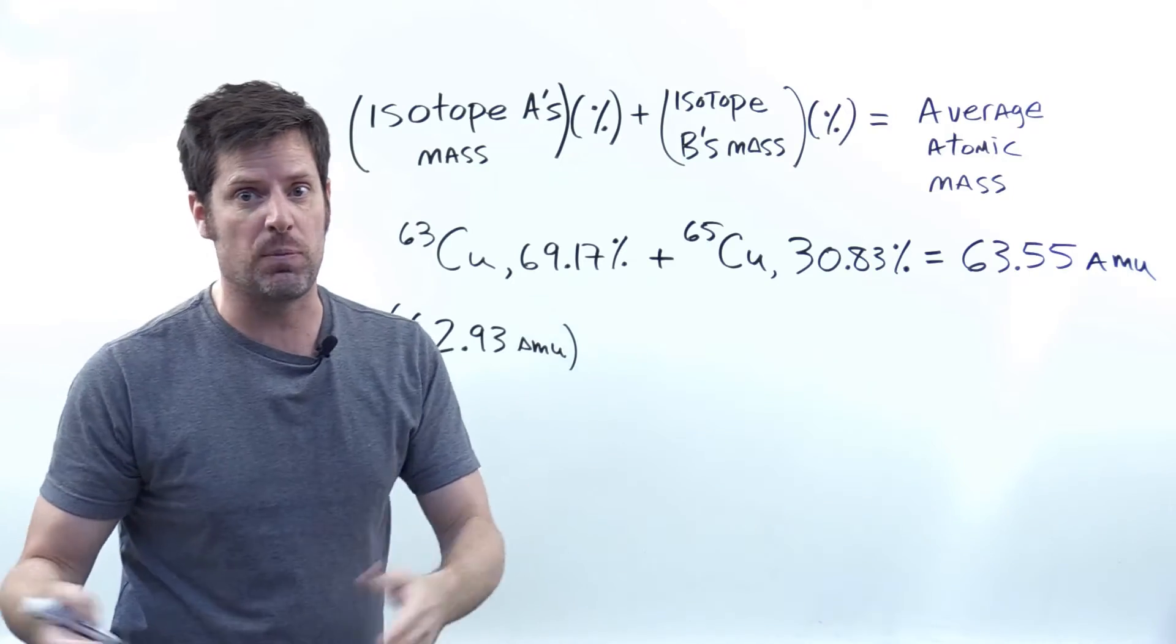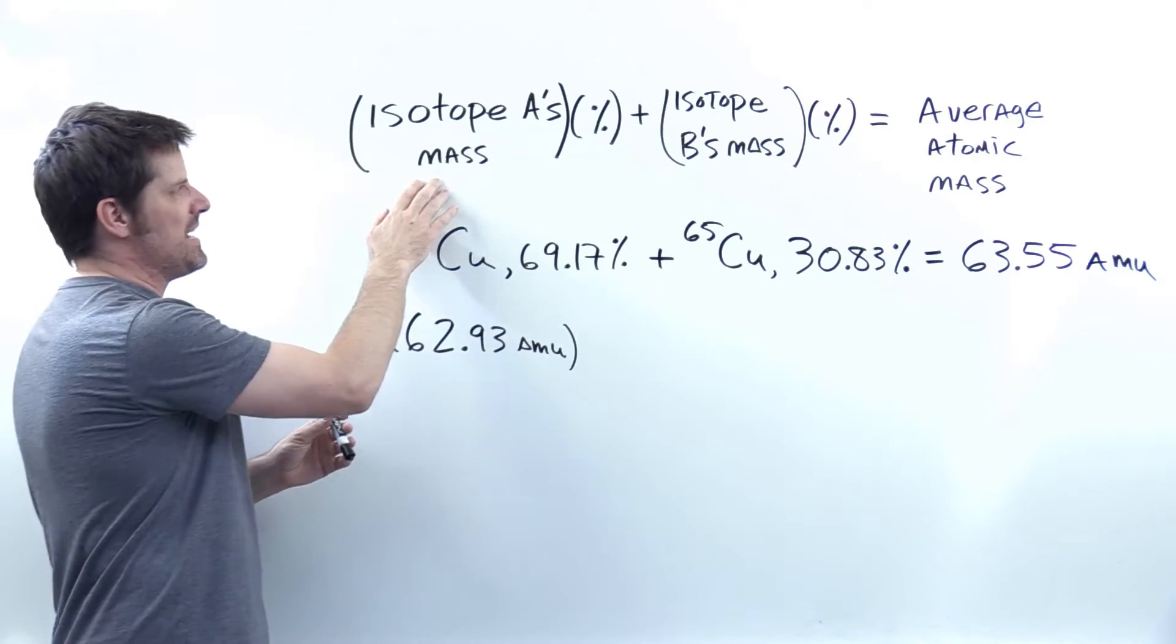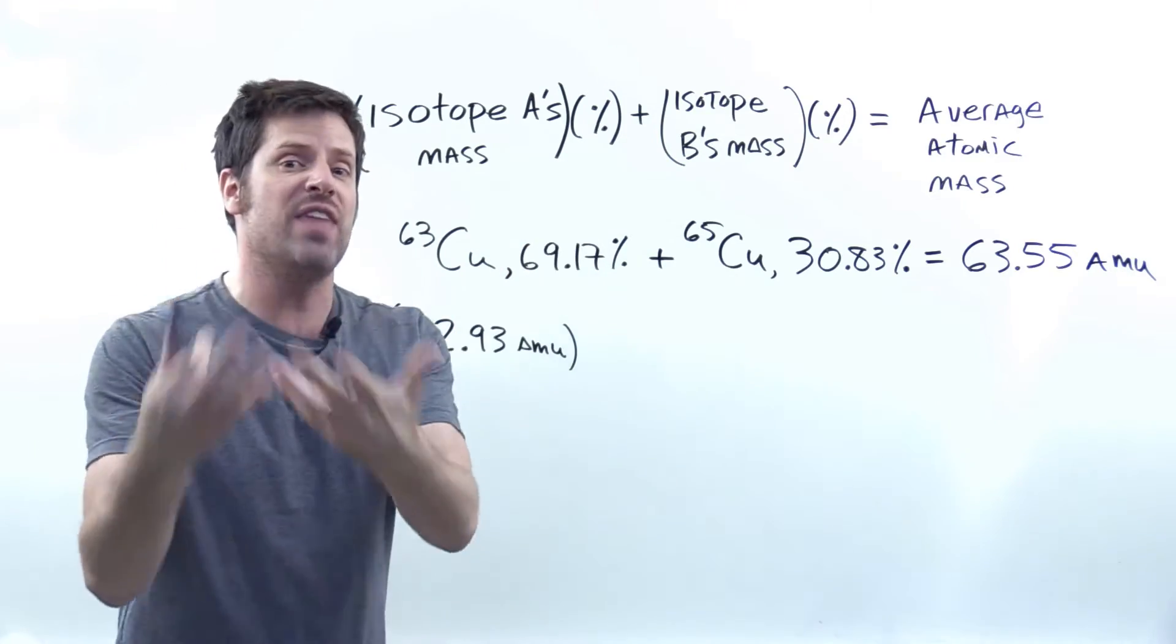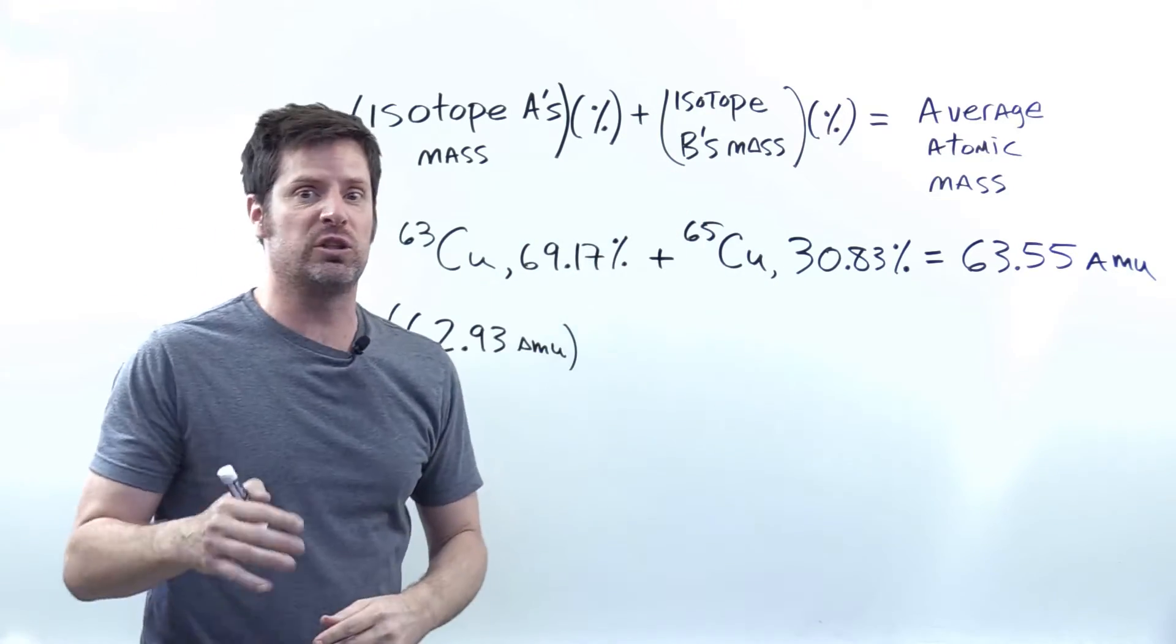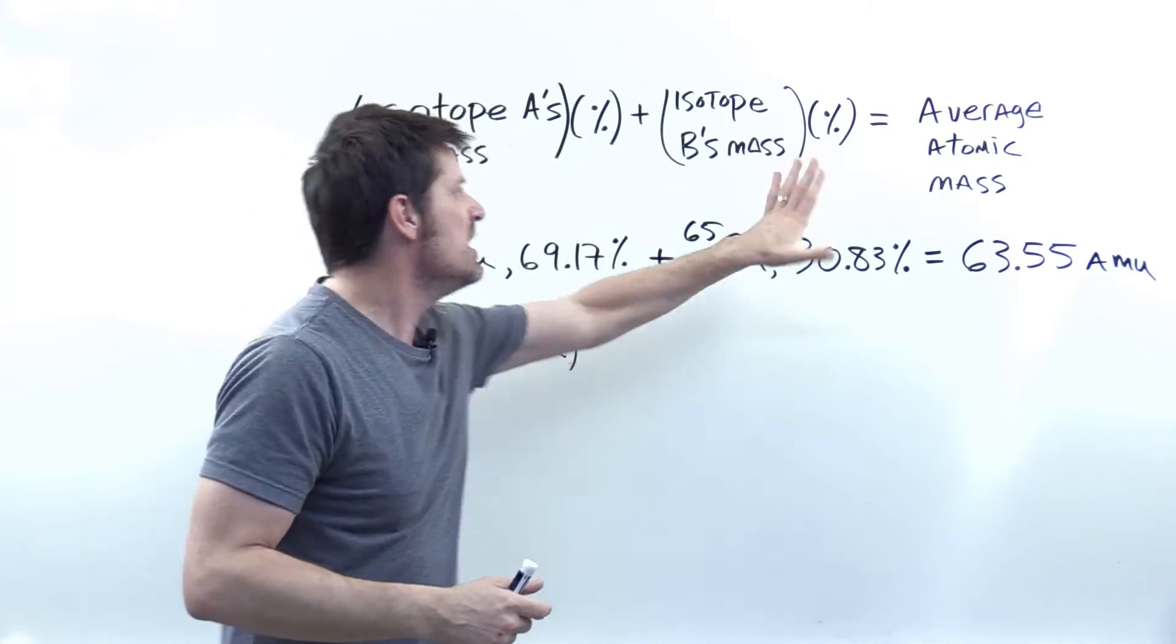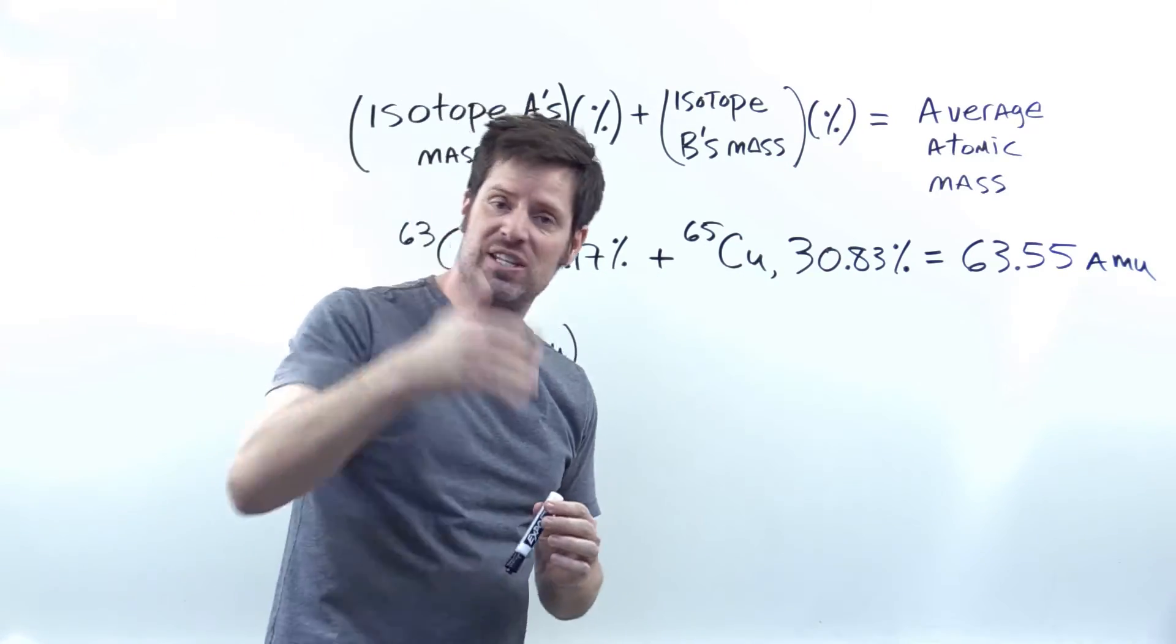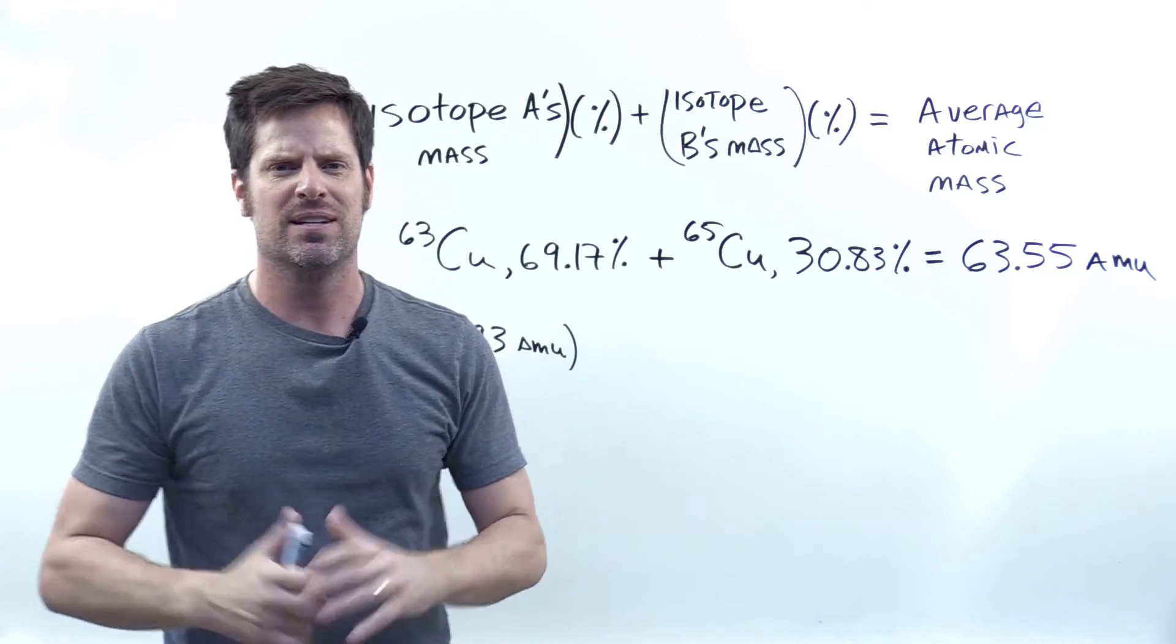if I have two different isotopes A and B for a specific element, if I take isotope A's mass and multiply it by its respective percentage, and then add that to isotope B's mass multiplied by its respective percentage, it should equal the average or weighted average atomic mass that we would see on the periodic table for that element. Make sense?